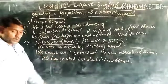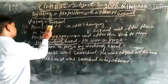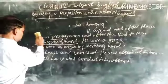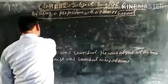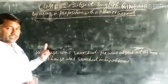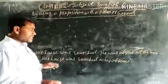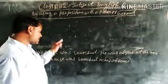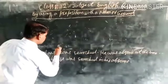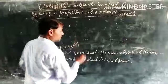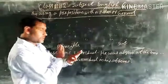In the second example: 'His house was searched. He was absent at the time.' Here are two sentences: 'His house was searched' and 'He was absent at the time.' You have to declare which is the principal clause and which is the subordinate clause. 'His house was searched' is the principal clause — in this sentence you cannot change anything.